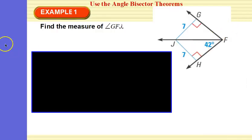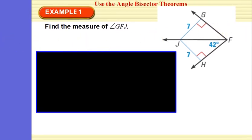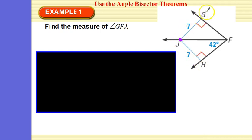Find the measure of angle GFJ — this angle right here. Use the angle bisectors theorem. The angle bisectors theorem says if it's an angle bisector, then from a point on the angle bisector to each leg, the distance should be equal. The distance is always perpendicular. Do you see how this perpendicular distance here is equal to this perpendicular distance here? That proves that this is an angle bisector. Therefore, these two are congruent, and this is 42 degrees.